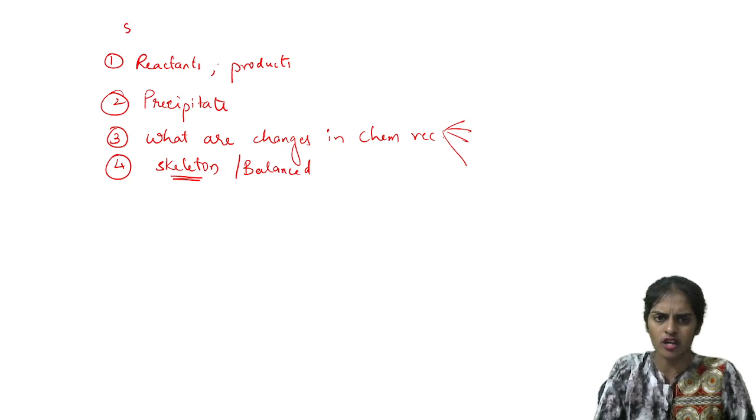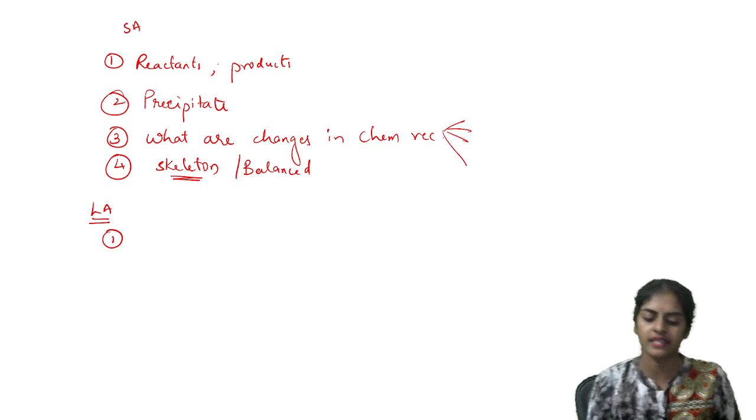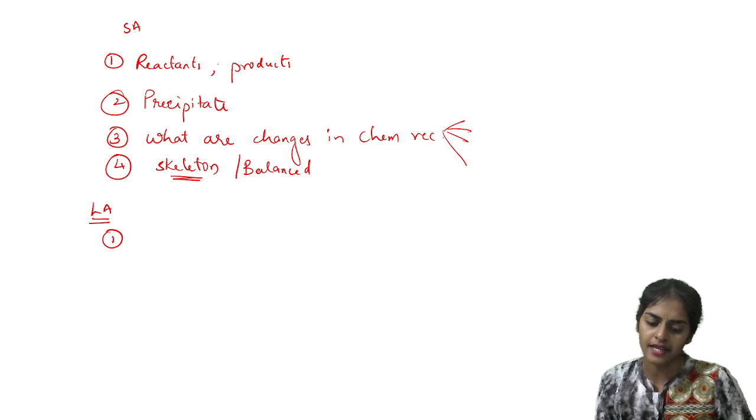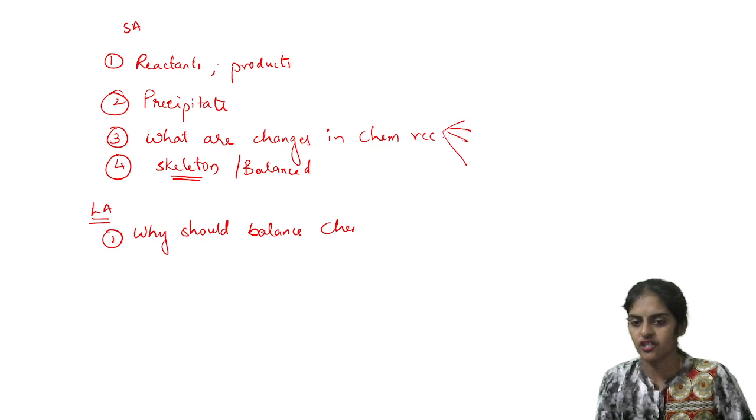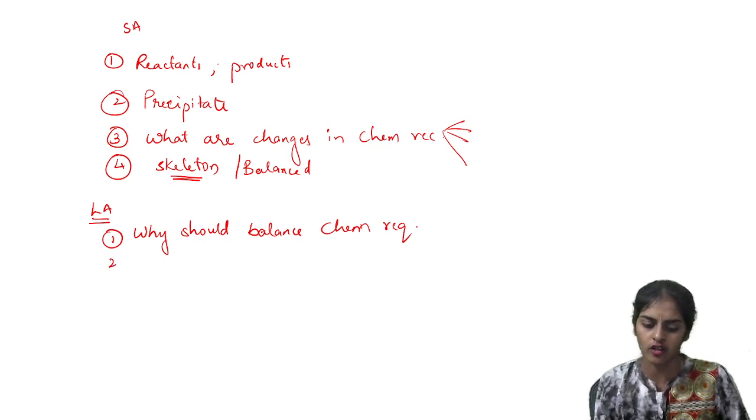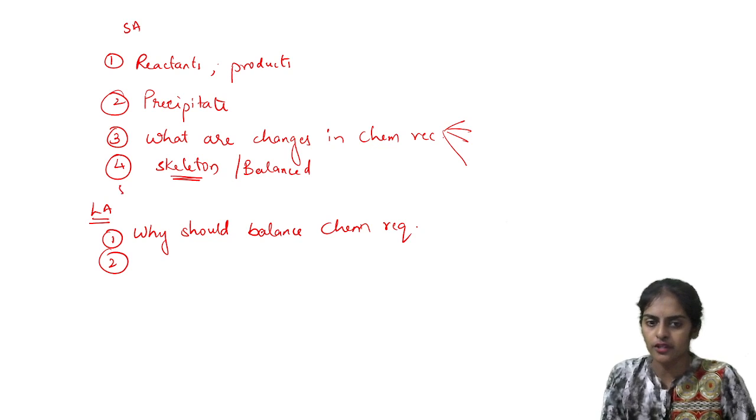So here are four questions in short answer. Now for long answer, first very important long answer question: Why should we balance a chemical reaction? This question is very important long answer.